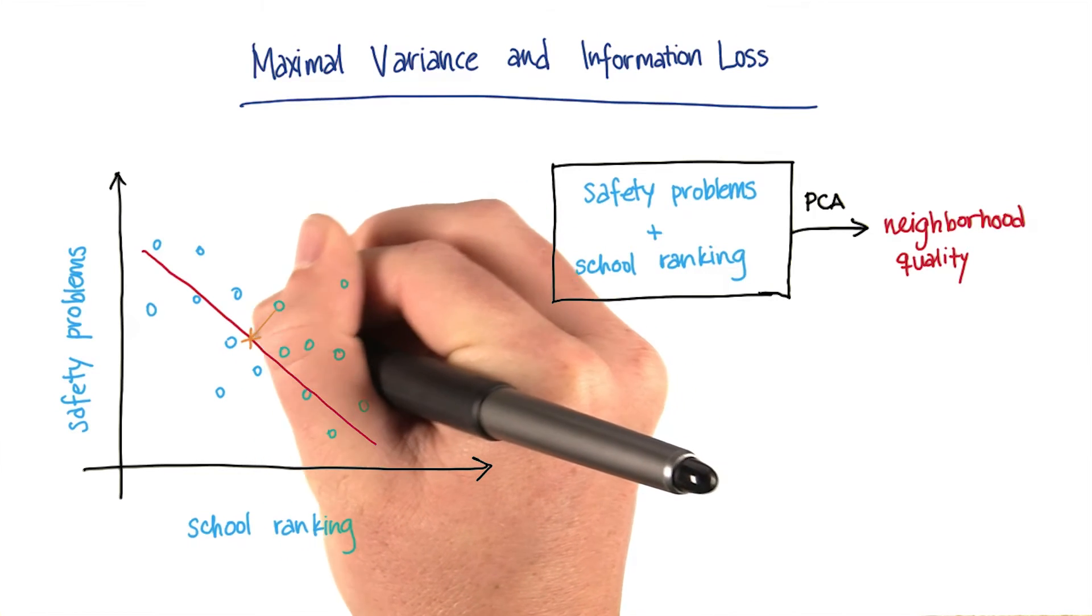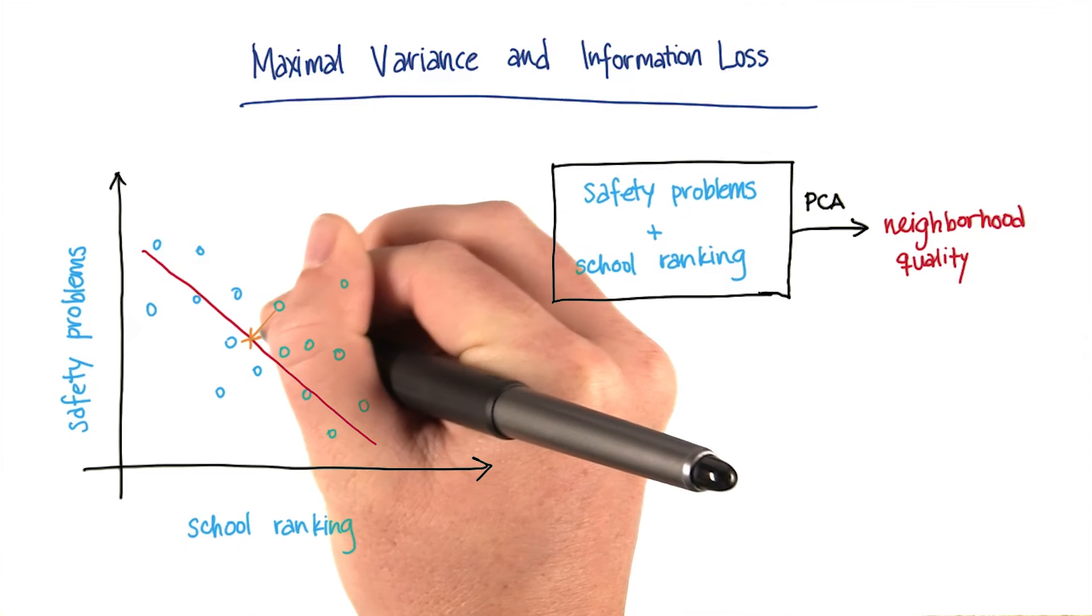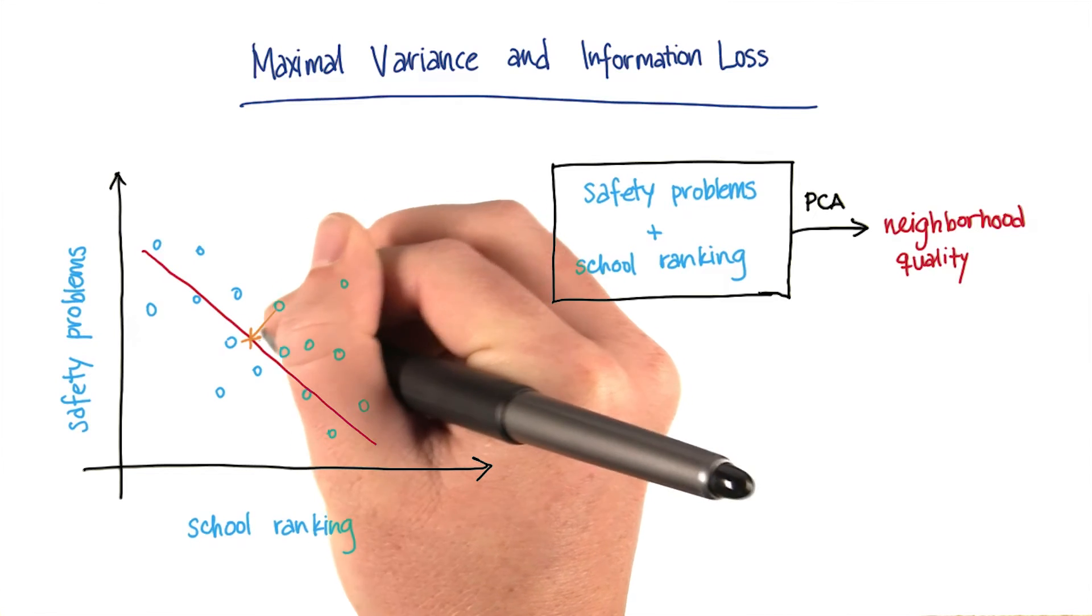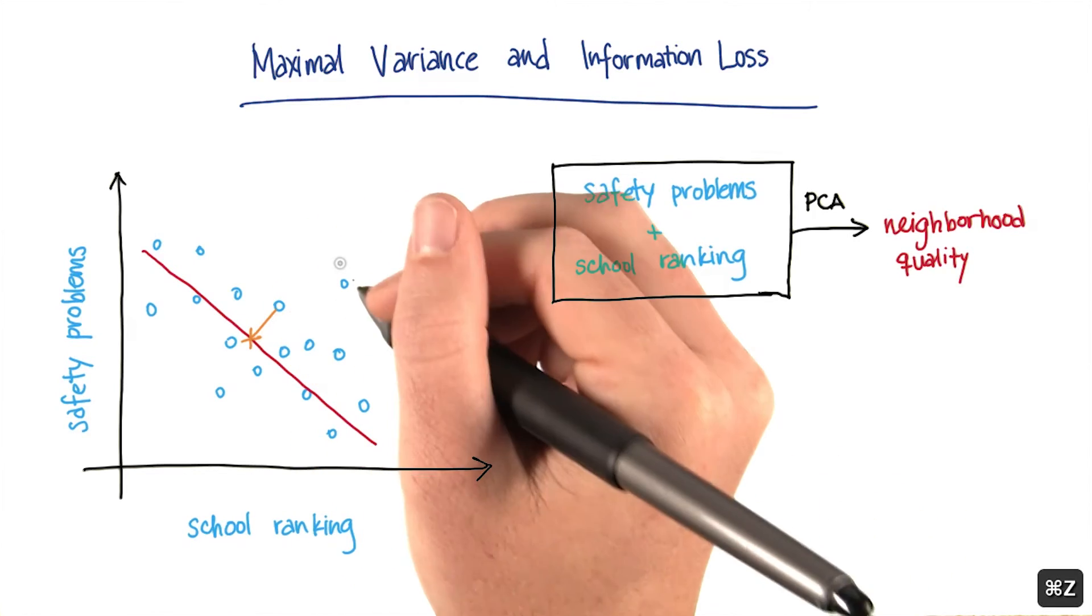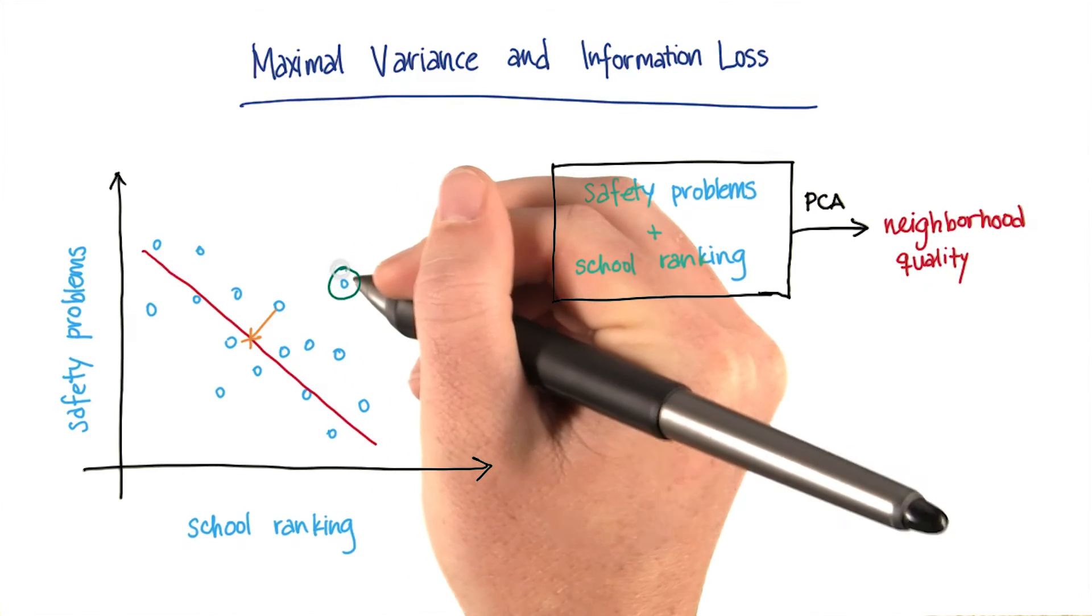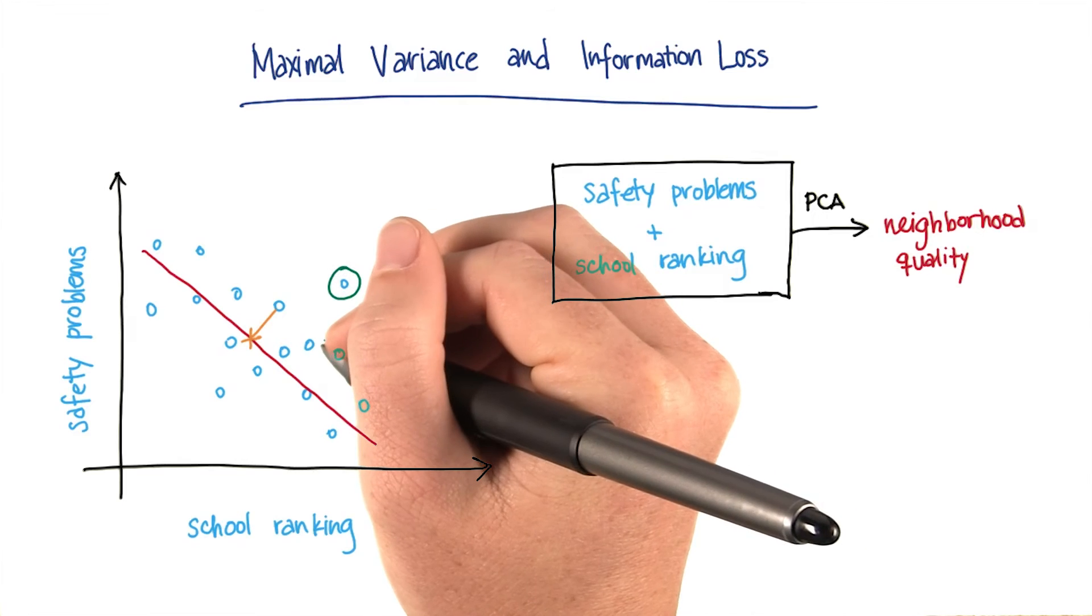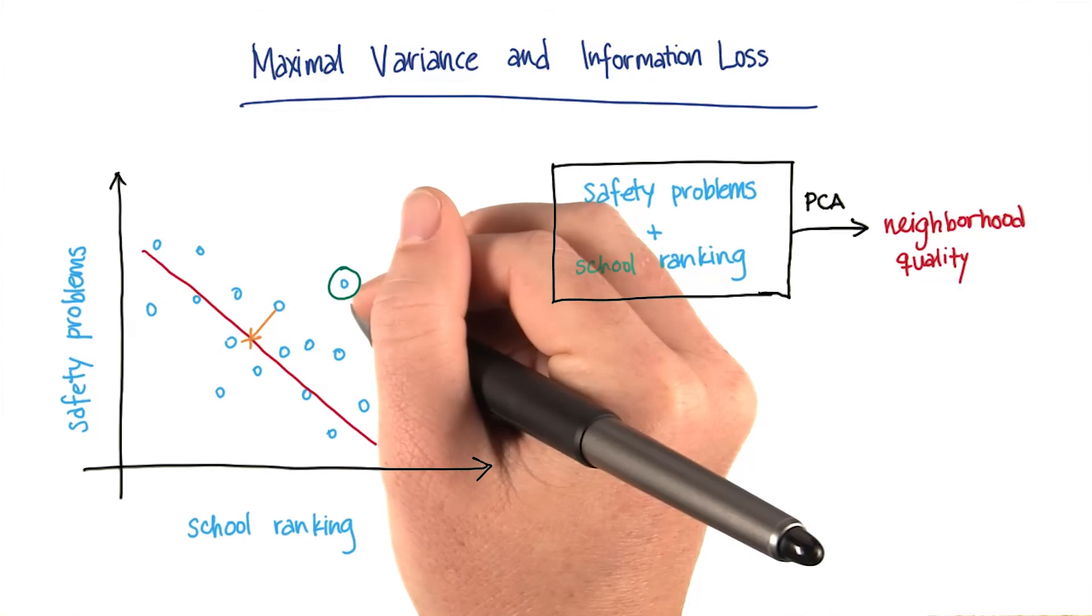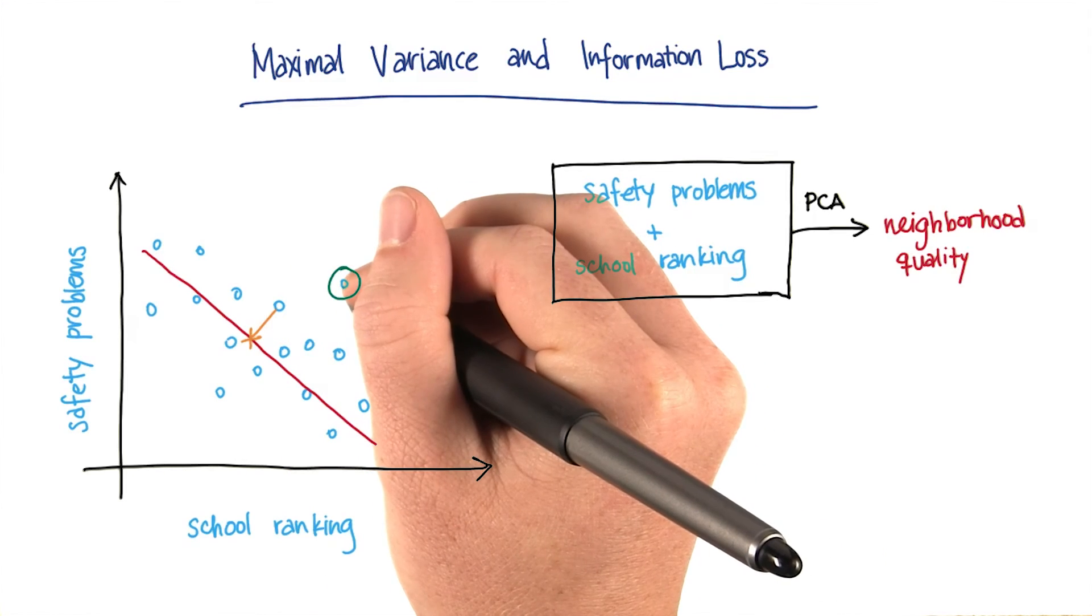For this blue point here, the amount of information lost is roughly equal to the length of this yellow line. So here's a little quiz to make sure you understand. I'm circling a point in green here, and this point is going to be projected down onto the principal component as well, like all the other points in this dataset.